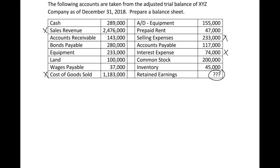Another way this can be asked is you'll be given a trial balance with a beginning retained earnings instead of ending, and you'll have to come up with net income and then do the retained earnings formula to get the ending retained earnings balance. That's a bit lengthy but it does combine both financial statements into one problem, so just be aware that's a possibility you might see in homework or on the test.